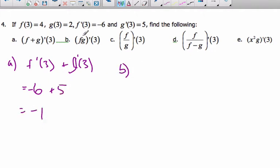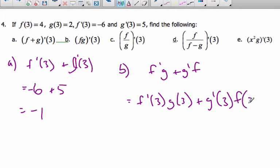The b part says I have a product of f and g. Well, the derivative of f product g is going to be f prime g plus g prime f. So now, using the notation with 3, it's going to be f prime at 3, g at 3, plus g prime at 3, f at 3.